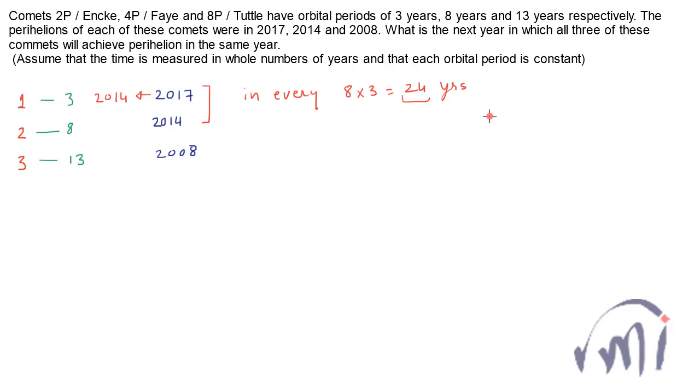Every 24 years these two are having their perihelion together. The next year when they will have their perihelion together will be 2014 plus 24 multiplied by x.